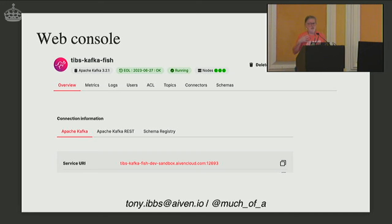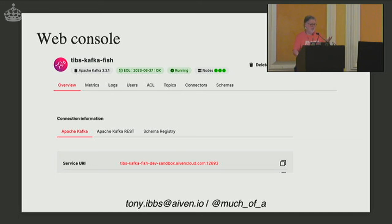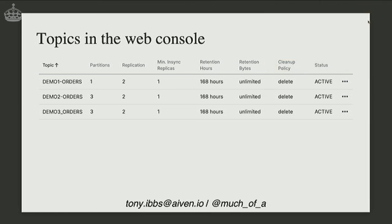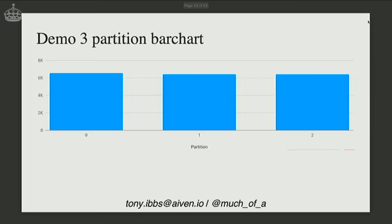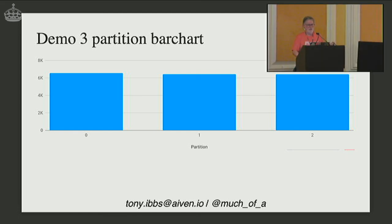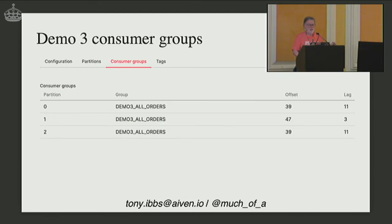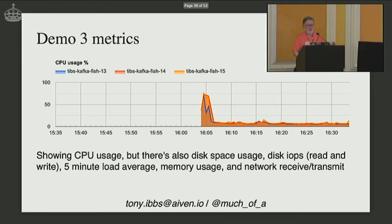Using the IVAN web console for my service, it gives connection information in a very easy way. You can see three nodes at the top — my Kafka service has three nodes, which is about the minimum you'd want. I can view the topics — demo one, two, and three — showing their partition counts: demo one has one, the others have three. I can get a bar chart showing how much is in each partition, and there are various metrics like CPU usage across the three nodes, all without needing to set up Grafana.